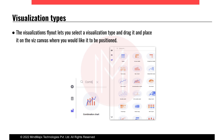For visualization types, the visualization flyout lets you select a visualization type and drag and place it on the canvas where you would like it positioned. When you click the plus button in Spotfire Analyst, you will see a number of visualization types available. In newer versions of Spotfire, you can also type a search term — for example, typing 'comb' will show the combination chart option.